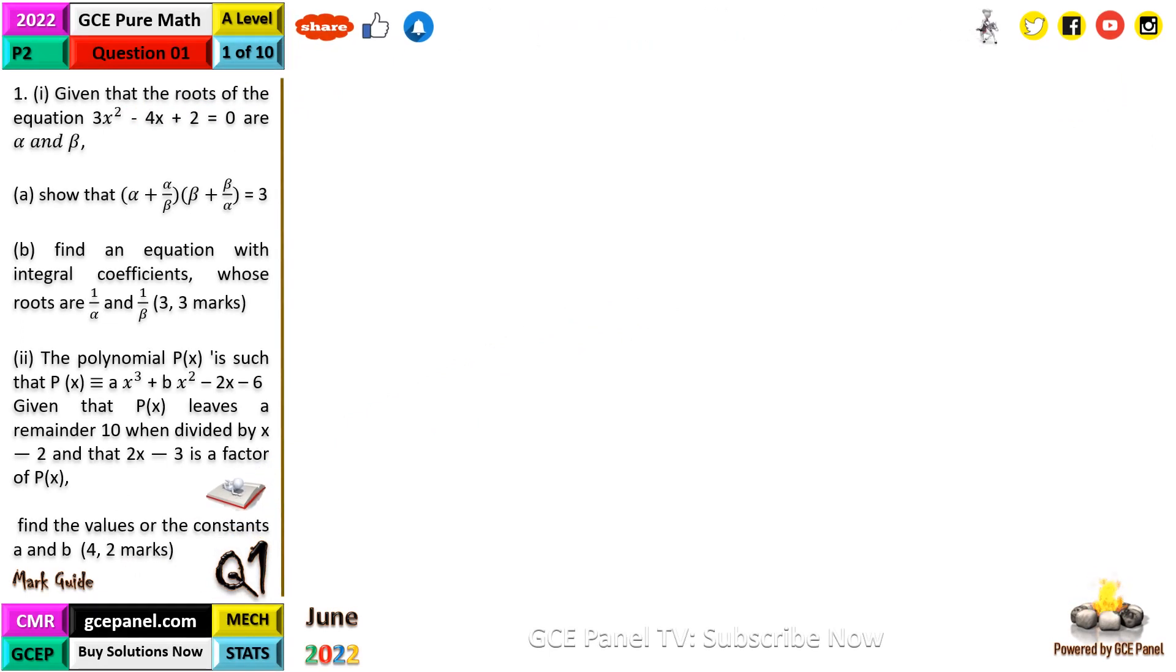Let's start with the first question, which reads: Given that the roots of the equation 3x² - 4x + 2 = 0 are α and β, show that (α + α/β)(β + β/α) = 3.